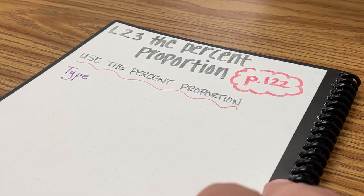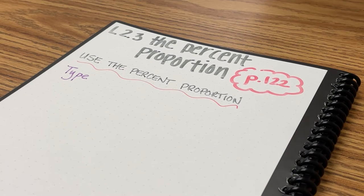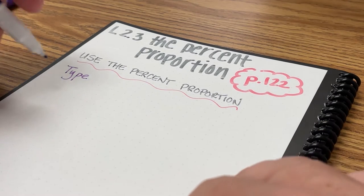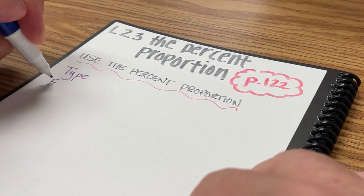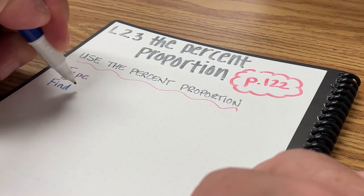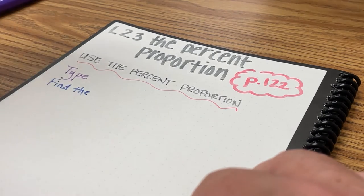In Lesson 2.3, the Percent Proportion, we're going to use the Percent Proportion to determine an unknown. So there are three different types of problems.